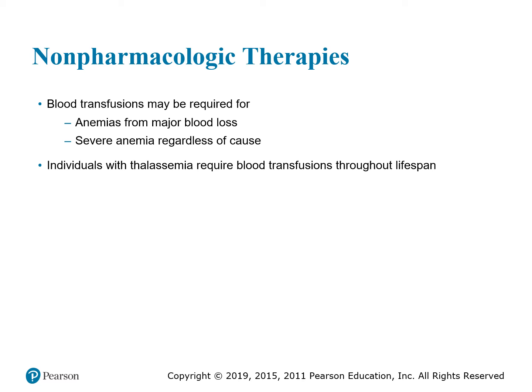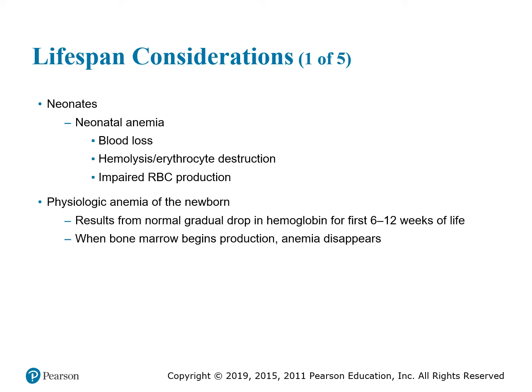If anemia is from blood loss and volume needs to be replaced, a blood transfusion will be done. Make sure the patient is willing to receive a blood transfusion. Individuals with thalassemia require blood transfusions throughout the lifespan. Look on pages 76 and 77 at the clinical manifestations and therapies chart — it lists the different anemias, the clinical manifestations a patient would experience, and the therapies to treat each type. Please read over that; it's a very good chart.